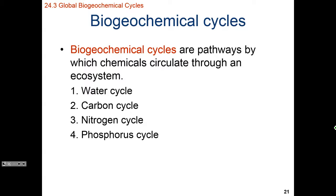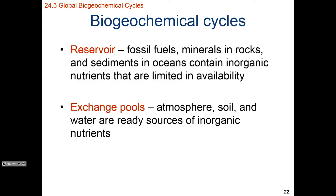Let's spend some time talking about biogeochemical cycles — this is the inorganic nutrient cycling that occurs. These nutrients are going to circulate between biotic and abiotic factors within our ecosystem. We're going to have reservoirs, which generally speaking are going to be long-term storage. These reservoirs don't have high rates of turnover for these nutrients.